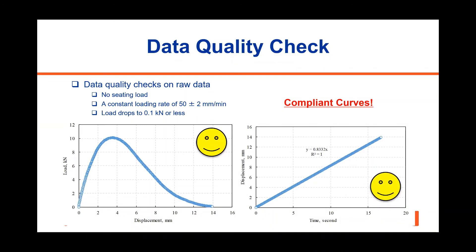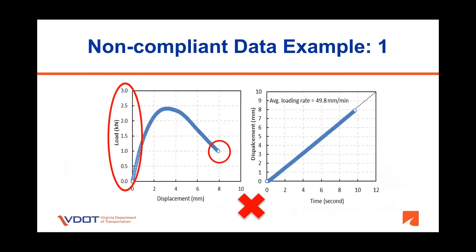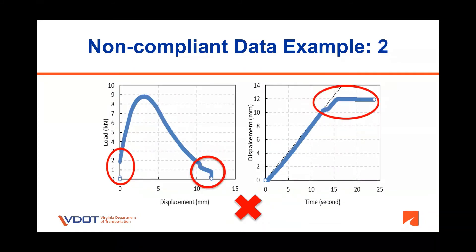Non-compliance in test data can lead to incorrect CT index values that would result in unnecessary redesigns or rejected materials. In the next three slides, we will see examples of non-compliant data. As we can see, the load did not drop below 0.1 kN although the required loading rate was maintained throughout the test. Also in this example, the load data shown are in US units instead of kN as labeled. Consistency in units is needed for correct calculation of the CT index.